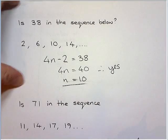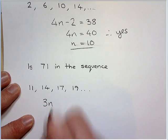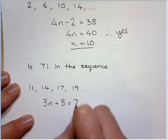Let's do the same for this one. So is 71 in this sequence? You should be able to see this is going up in 3s, but it's 8 more than the 3 times table. So is that equal to 71?